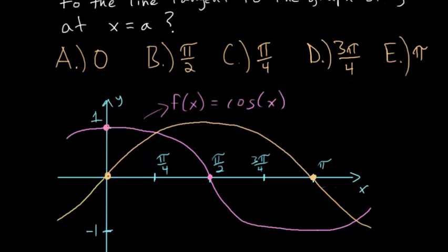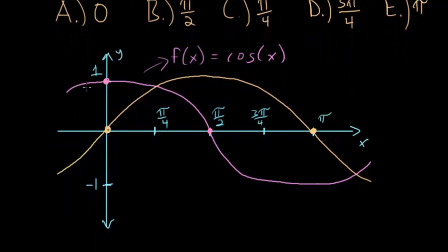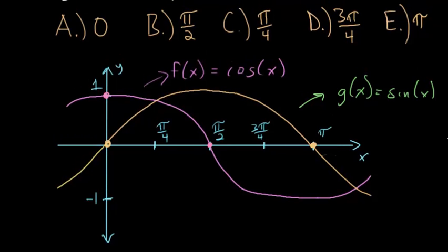Here are the graphs of the two functions. The pink one is for the cosine of x, and the orange one is g of x equals sine of x. To understand this problem more visually, let's draw tangent lines on each of these graphs at these five different points.